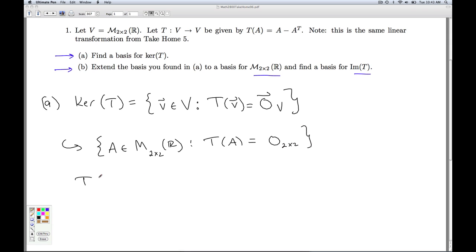Let's set T of A equal to the zero matrix. That means that A minus A transpose is the zero matrix. That means that A has to equal A transpose.